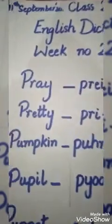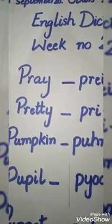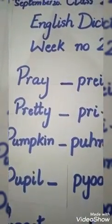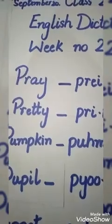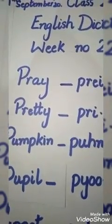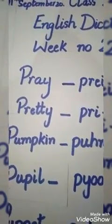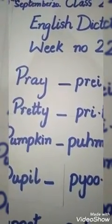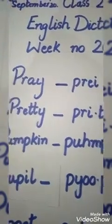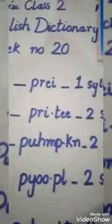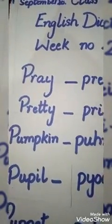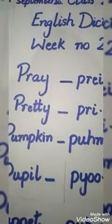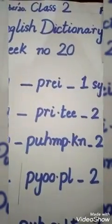Pray. Our second word is 'Pretty'. P-R-E-T-T-Y, Pretty. Pretty is a two-syllable word. Our next word is 'Pumpkin'. Pumpkin is a two-syllable word.